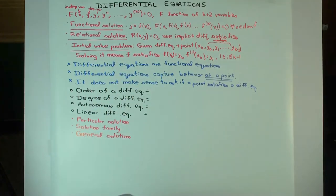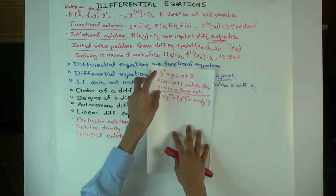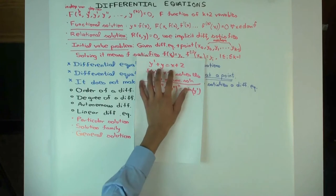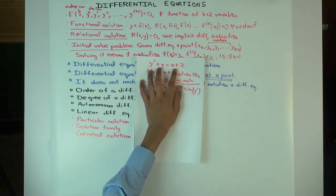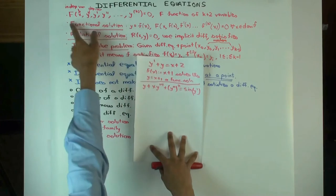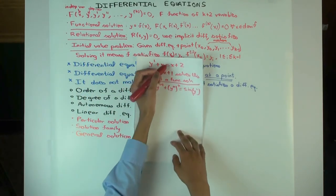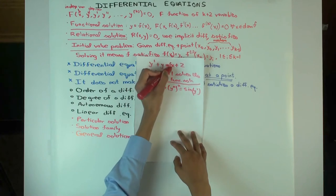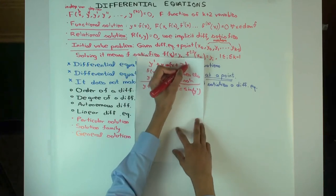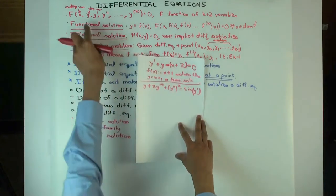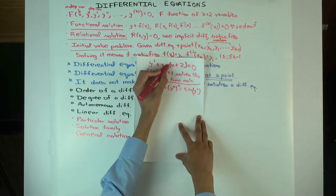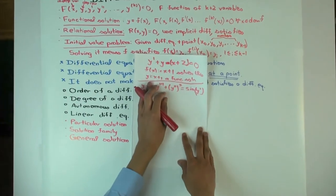A relational solution is something similar. We talk about a relational solution, but let me just give you a quick example of a differential equation first. Here's one: y prime plus y is x plus 2. Now if I wanted to write it in the F form, I would just bring everything to one side. Often people write it with some stuff on the left and some stuff on the right.